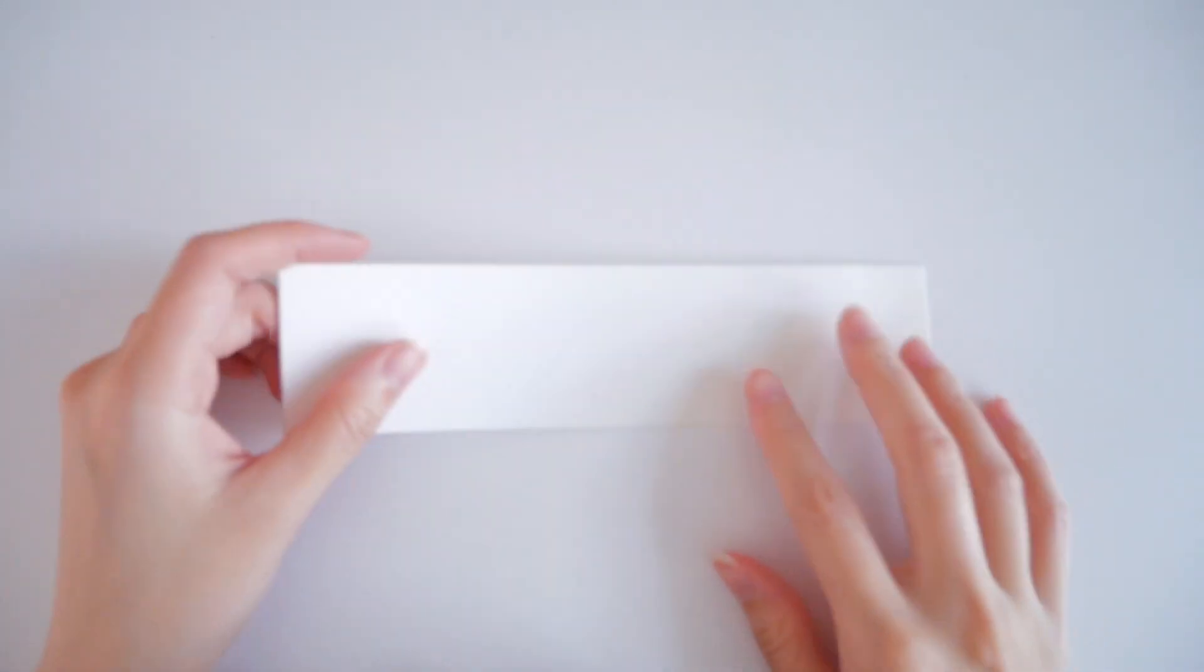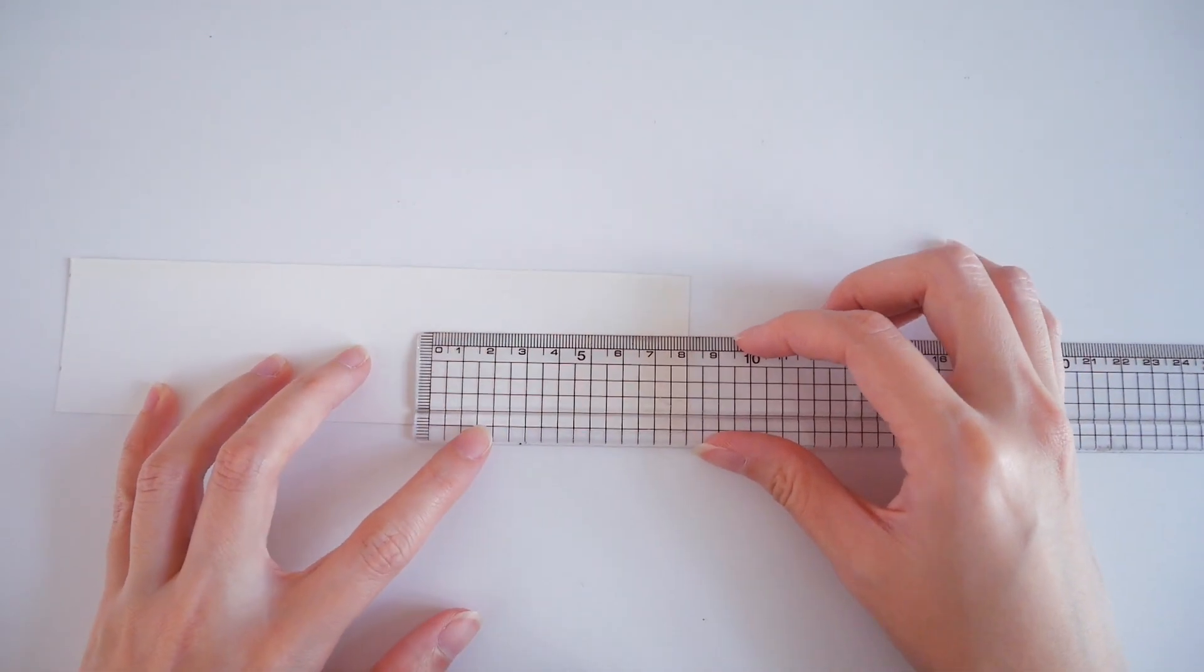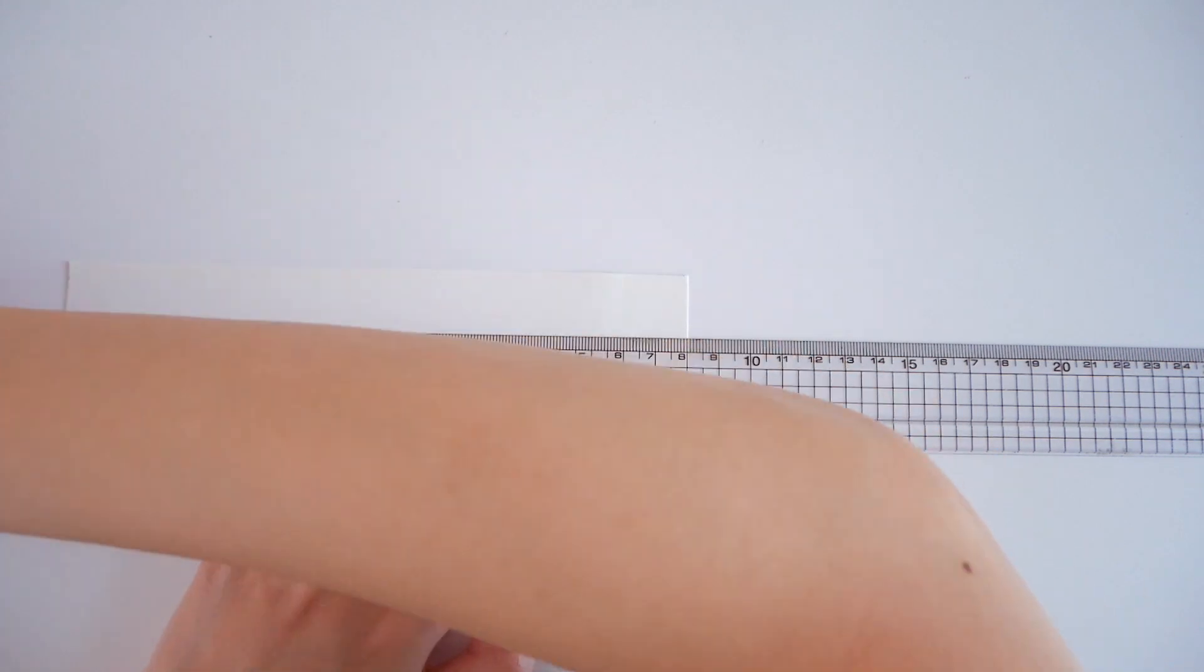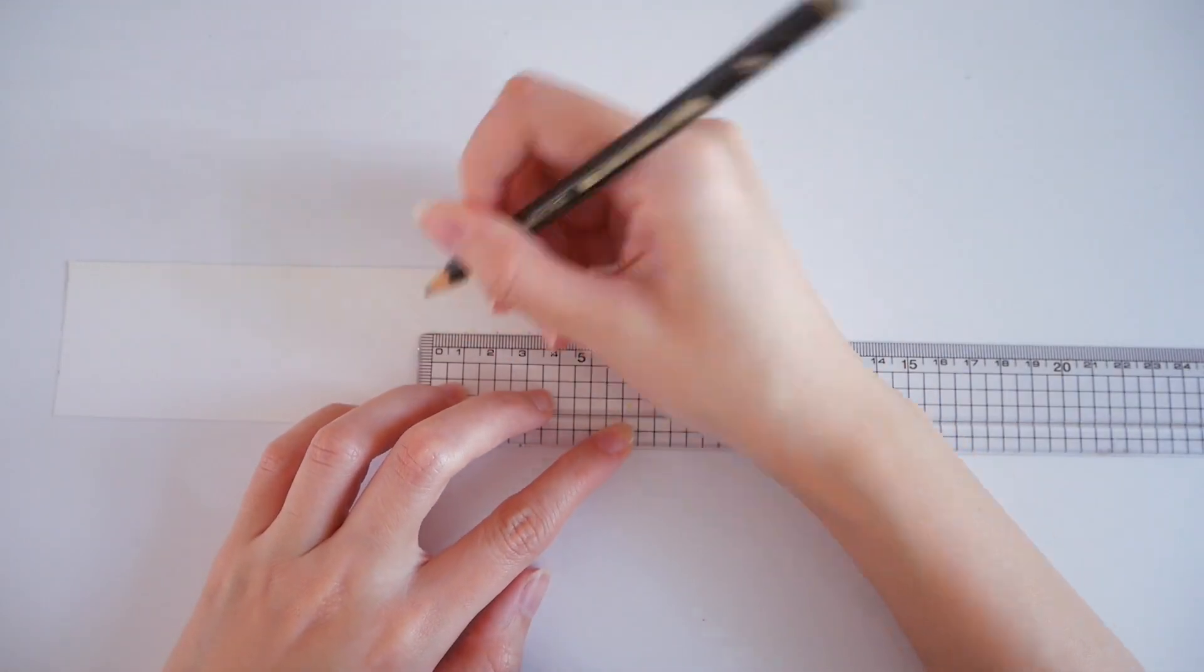On the other longer strip of card paper, measure 5 cm from the right and also mark out three 1 cm intervals towards the left.